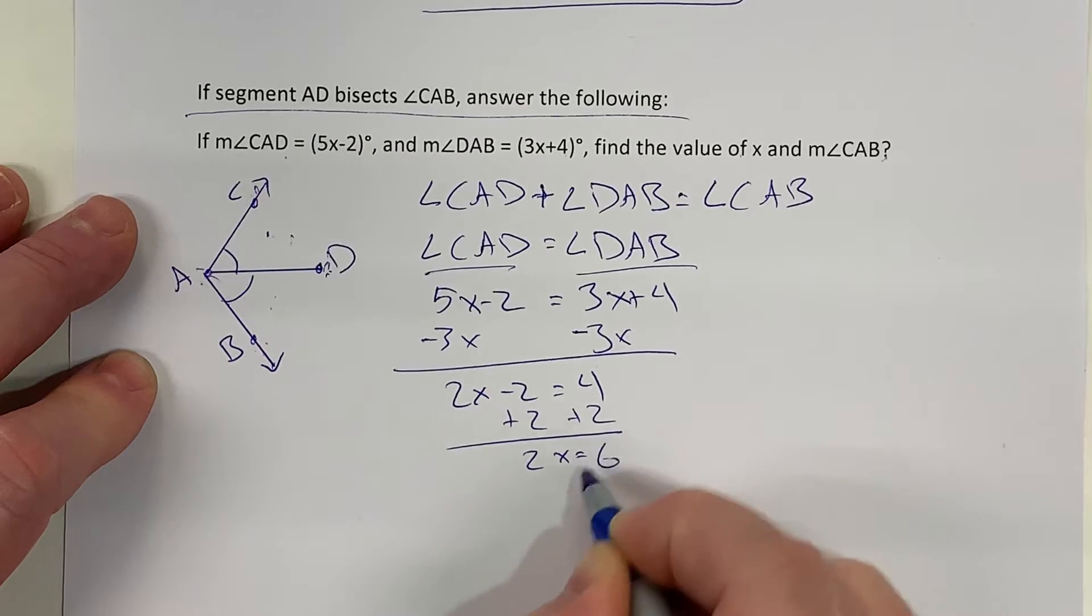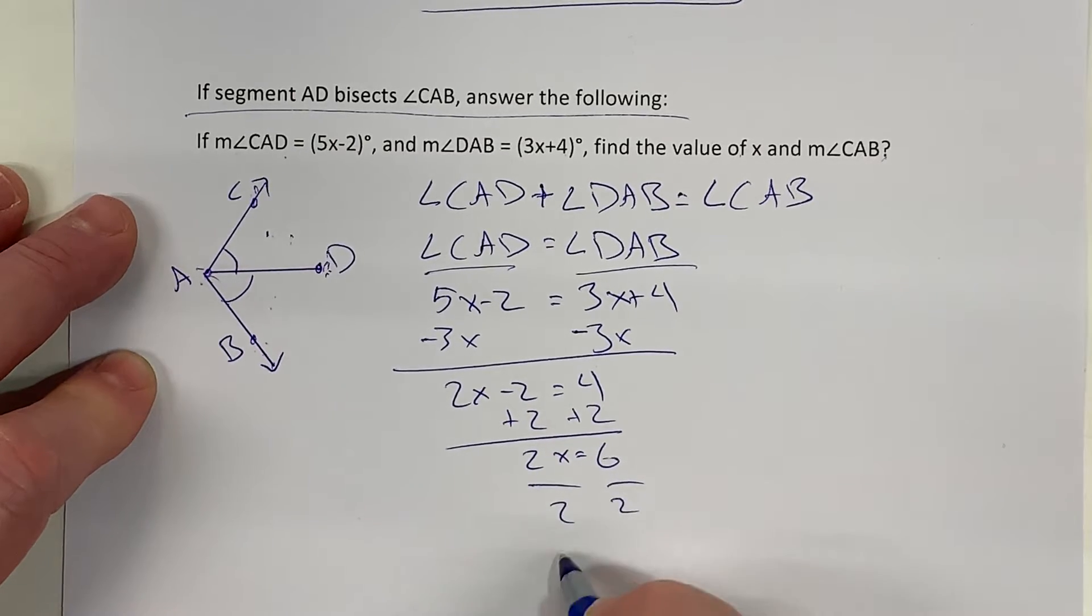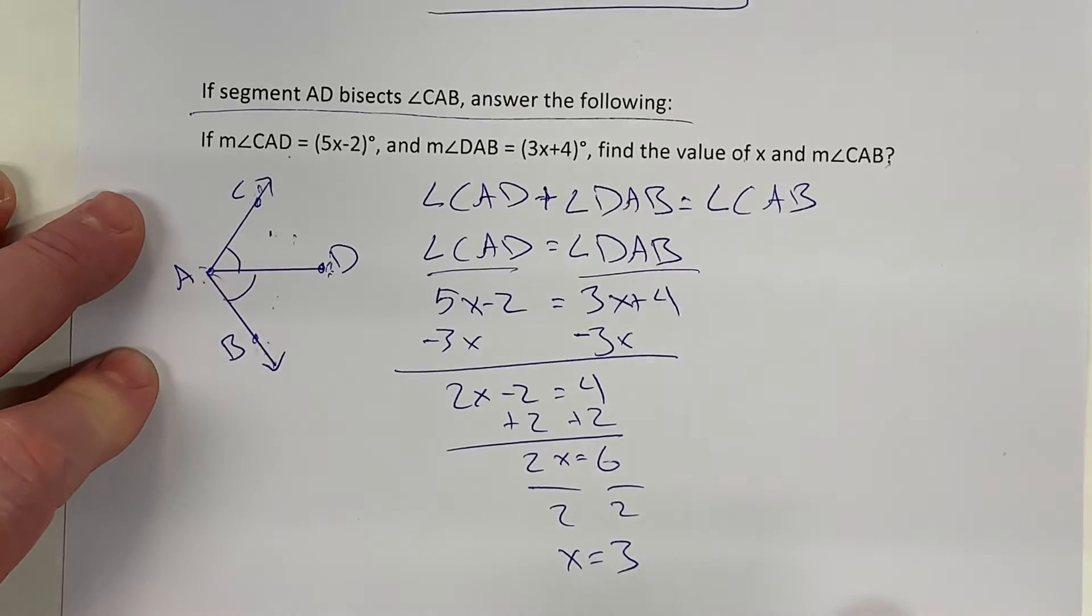Move the constants to the other side. 2x equals 6. Divide both sides by 2 and I get x equals 3.